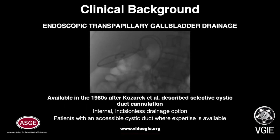Endoscopic Transpapillary Gallbladder Drainage became available in the 1980s after the description of selective cystic duct cannulation. This offers internal, incisionless drainage in patients with a patent cystic duct where endoscopic expertise is available. The transpapillary approach also preserves native anatomy compared to other endoscopic treatment options, including endoscopic ultrasound-guided gallbladder drainage with a lumen-opposing metal stent. This is felt to be advantageous if future surgical intervention is being considered, although recent data suggests both endoscopic approaches may be suitable.